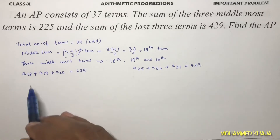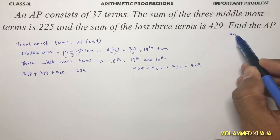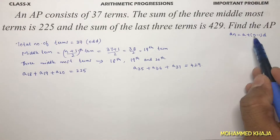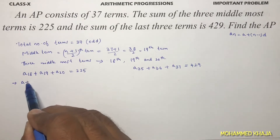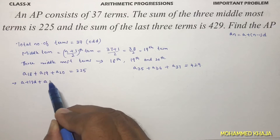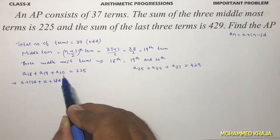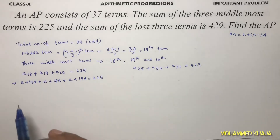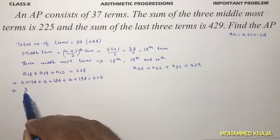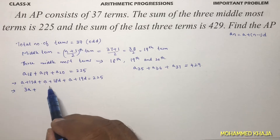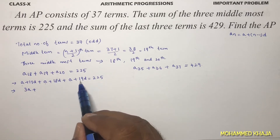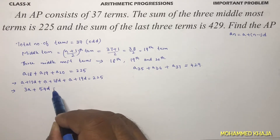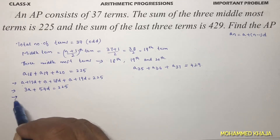Using the nth term formula a_n = a + (n-1)d: a18 = a + 17d, a19 = a + 18d, and a20 = a + 19d. Their sum equals 225. Adding them gives 3a + (17 + 18 + 19)d = 3a + 54d = 225.